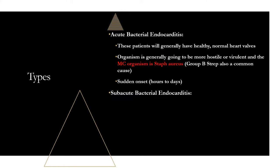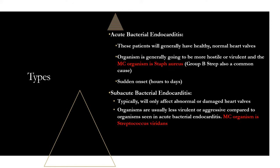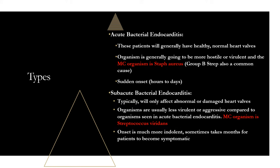Subacute bacterial endocarditis is different. The valves are typically damaged or abnormal — they have regurgitation or other problems, making them vulnerable. Because of that, the organisms are less virulent. The most common organism is Strep viridans, which is part of your normal oral flora. A routine dental cleaning or tooth extraction in a patient with damaged valves can lead to subacute endocarditis. The onset is much more indolent — it can take months to become symptomatic.